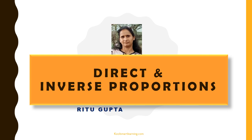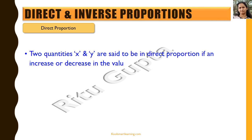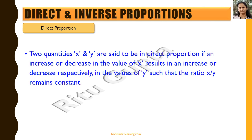Hello friends, we'll be talking about direct and inverse proportions. Let's first understand what we mean by direct proportion. Two quantities x and y are said to be in direct proportion if an increase or decrease in the value of x results in an increase or decrease respectively in the values of y, such that the ratio x by y remains constant. That is when we say x and y are directly proportional to each other.